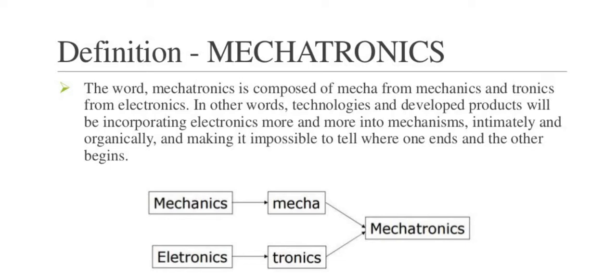Any automation system requires certain integer parts. The first is data processing and data storage. For data storage and data processing, there is required memory, a processor system, and data processing. And if this system is implemented practically, we require some hardware. So for the hardware, we require knowledge of electronics.